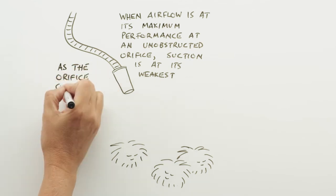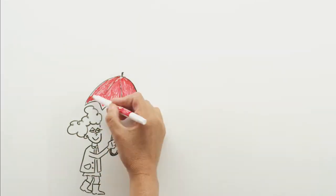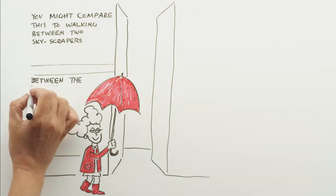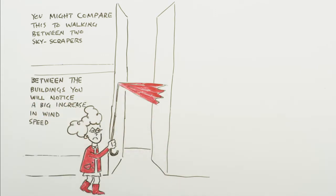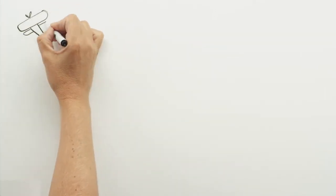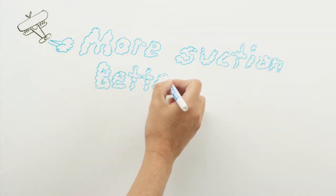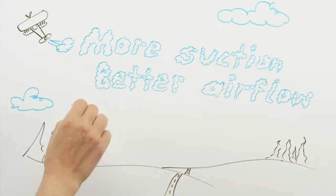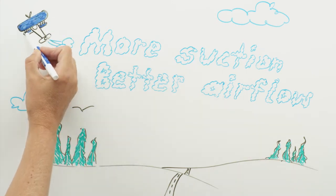However, as the orifice gets smaller, suction increases. You might compare this to walking between two city skyscrapers on an otherwise calm day. Between the buildings, you will notice a big increase in wind speed. What you need to know is that air flow and suction at the end of the hose work together to clean floors. More suction, better air flow. That is why systems with more suction offer better end of the hose cleaning performance.